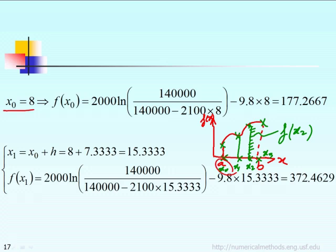x1 is equal to x naught plus h, because the distance from x naught to x1 equals h. So x1 equals x naught plus h, which gives x1 equal to 15.3333. Whenever you see x appear in the function, you just replace it by 8 for f(x0). That's why f(x0) is equal to 177.2667.